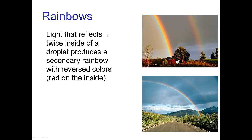Sometimes the reflection is strong enough that light actually reflects twice inside a droplet, and in that case we get a second rainbow — a double rainbow. The double rainbow is characterized by the fact that it's dimmer, but also the colors in the secondary rainbow are reversed. The primary rainbow has blue on the inside, while the secondary rainbow has red on the inside.